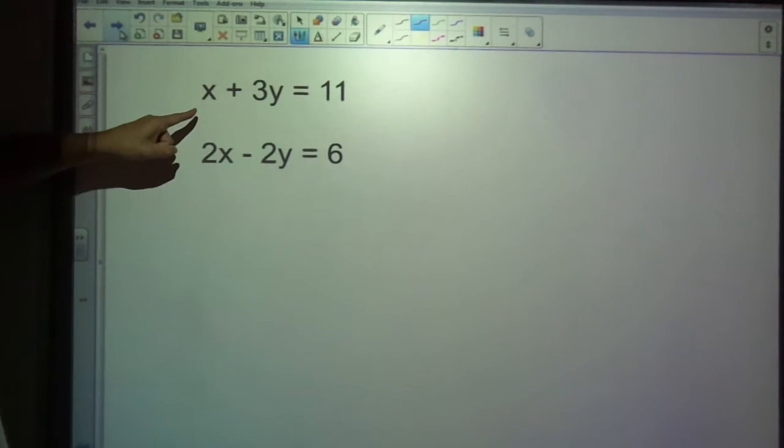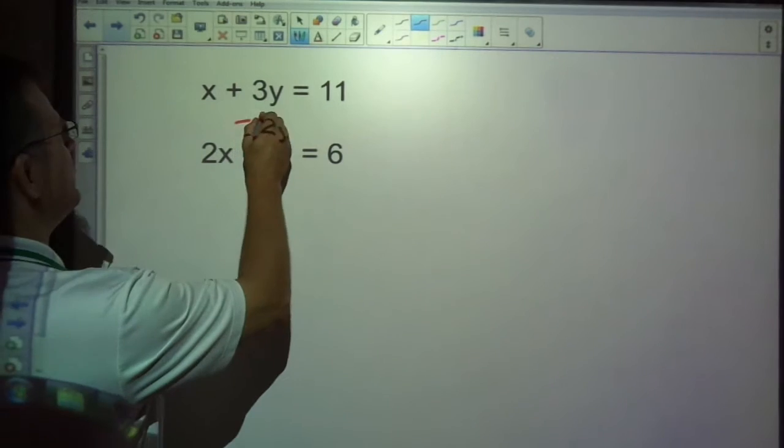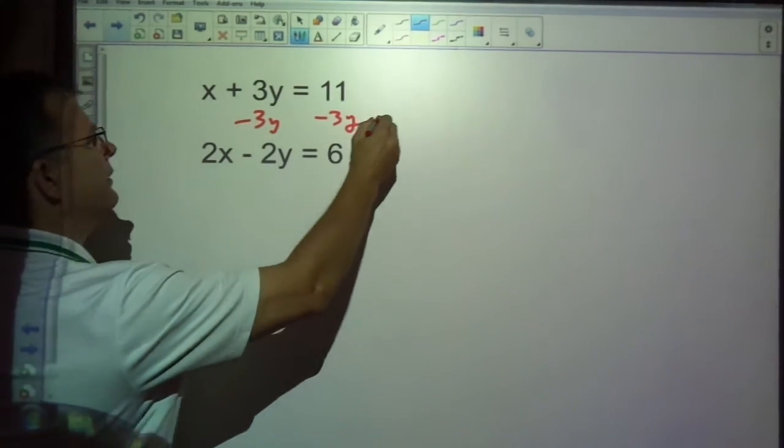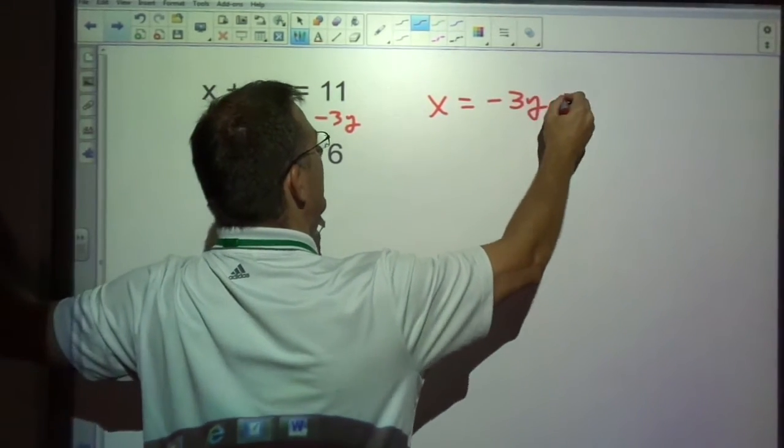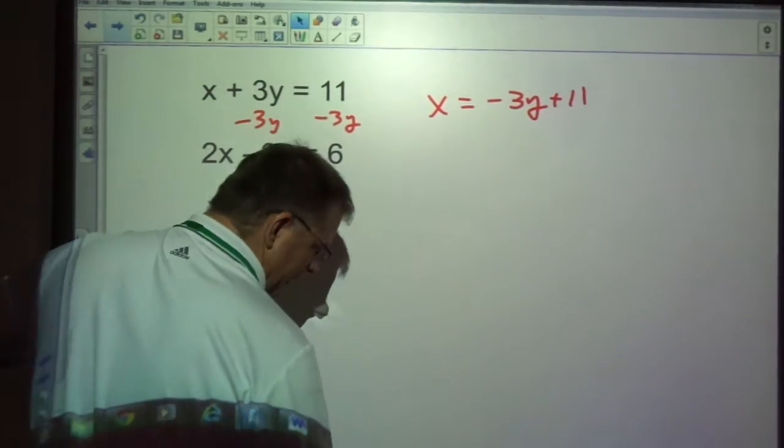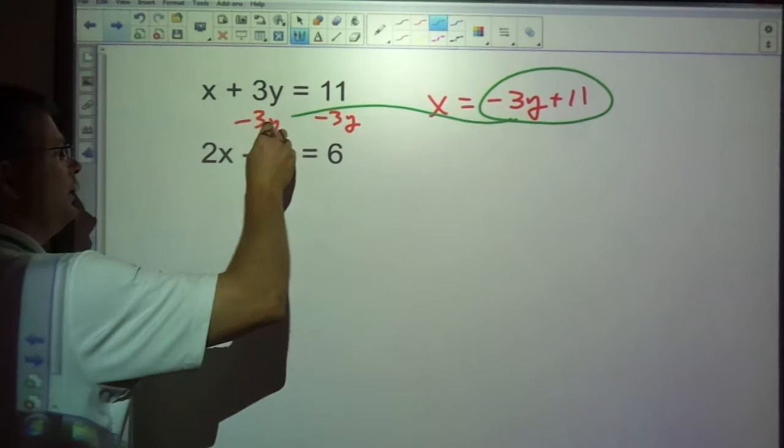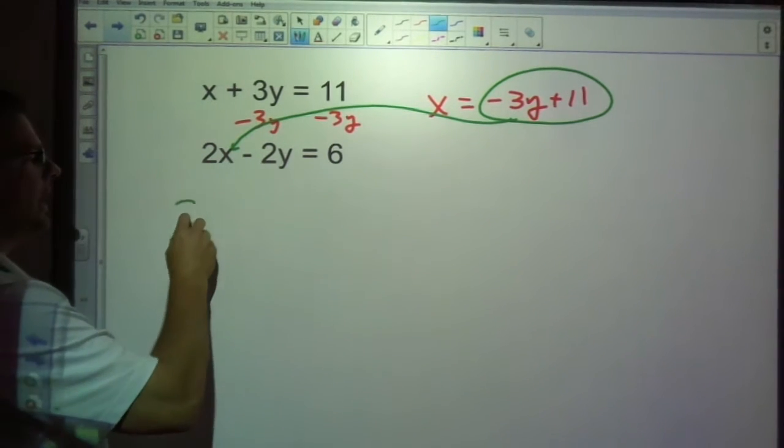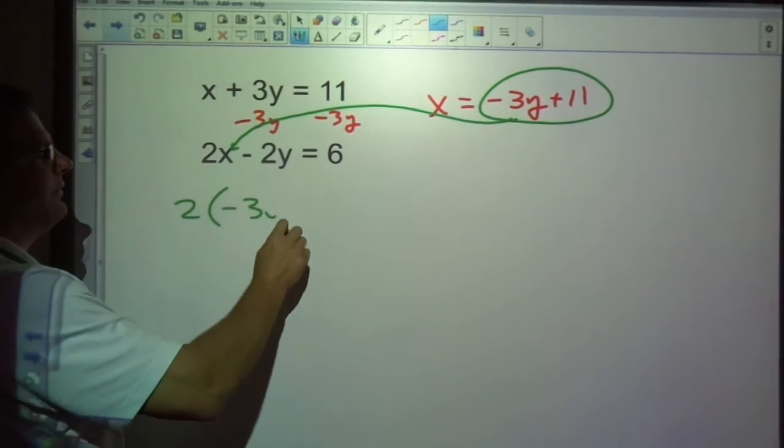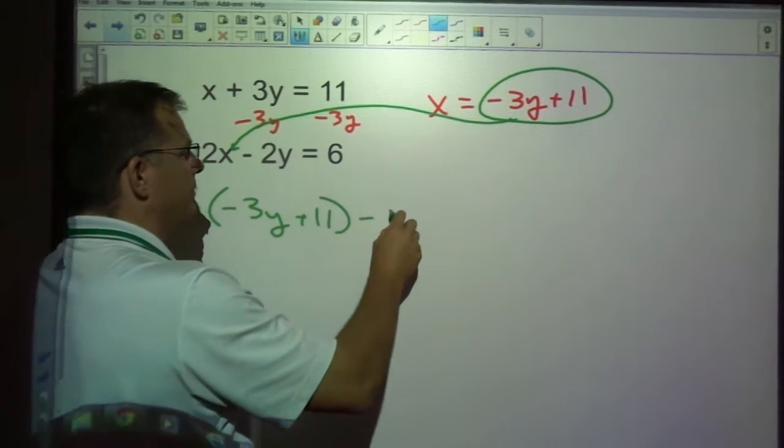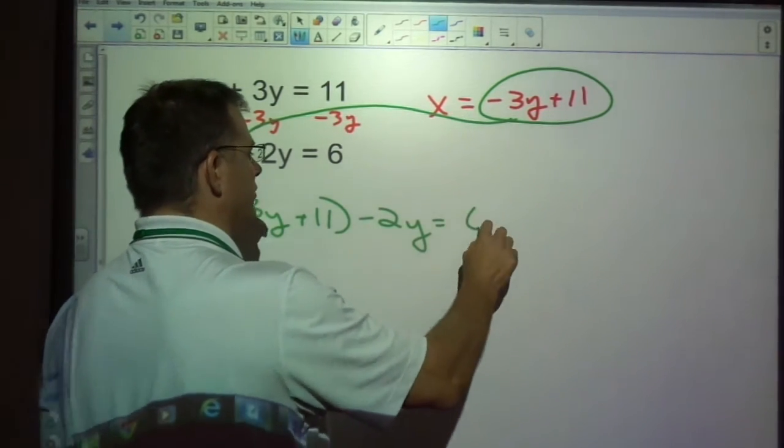This is the easiest variable to get by itself. So I'm going to subtract 3y here and give me x equals negative 3y plus 11. Since this is what x is equal to, I can substitute it in here for x. So that is negative 3y plus 11 minus 2y equals 6.